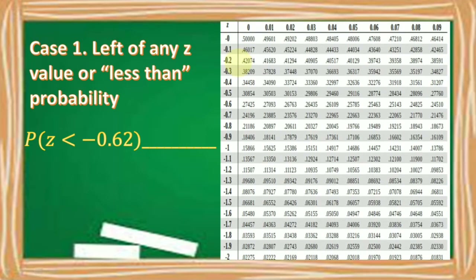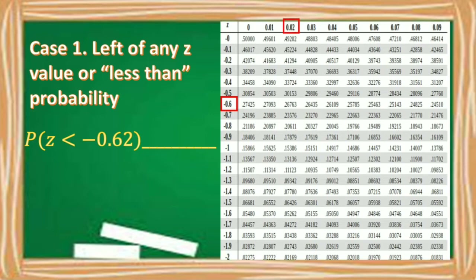Let's have another example. Find the probability of Z which is less than negative 0.62. Our given Z-score is a three-digit number. First, look for the first two digits, negative 0.6, in the first column. Then find the third digit, 0.02, in the first row, and find their intersection. The probability of Z less than negative 0.62 is 0.26763.